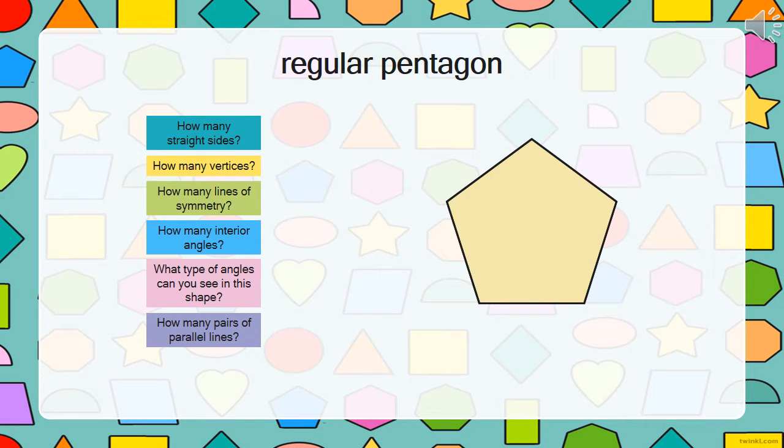Here we have a regular pentagon. It has five straight sides, five vertices, five lines of symmetry, five interior angles, five obtuse angles, and zero pairs of parallel lines.